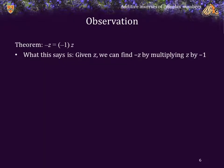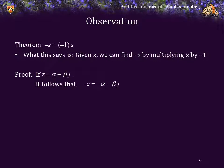Theorem: the additive inverse is equal to the additive inverse of the multiplicative identity times z. That is, the additive inverse of z can always be found by multiplying z by negative 1. Proof: let z be equal to alpha plus beta j. Therefore, it follows from our previous observation that the additive inverse is negative alpha minus beta j.